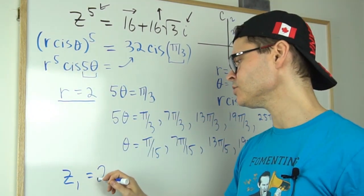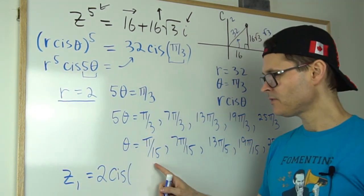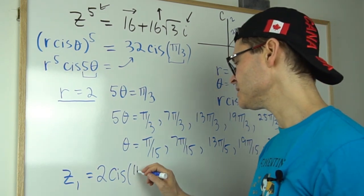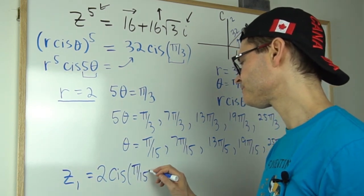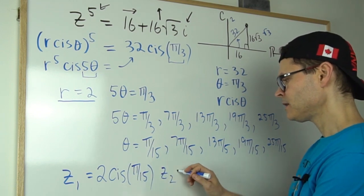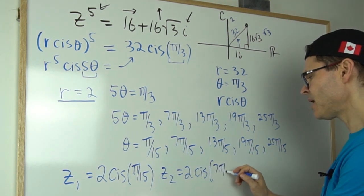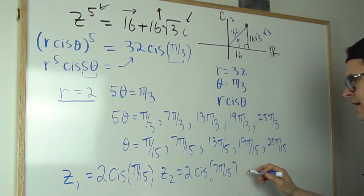So the first answer, I'll just call it z₁ is going to be, it's always written in r-cis form. So r is 2. And I write cis times the argument θ, which is in this case, π by 15. And the second one is going to be 2 cis 7π over 15.